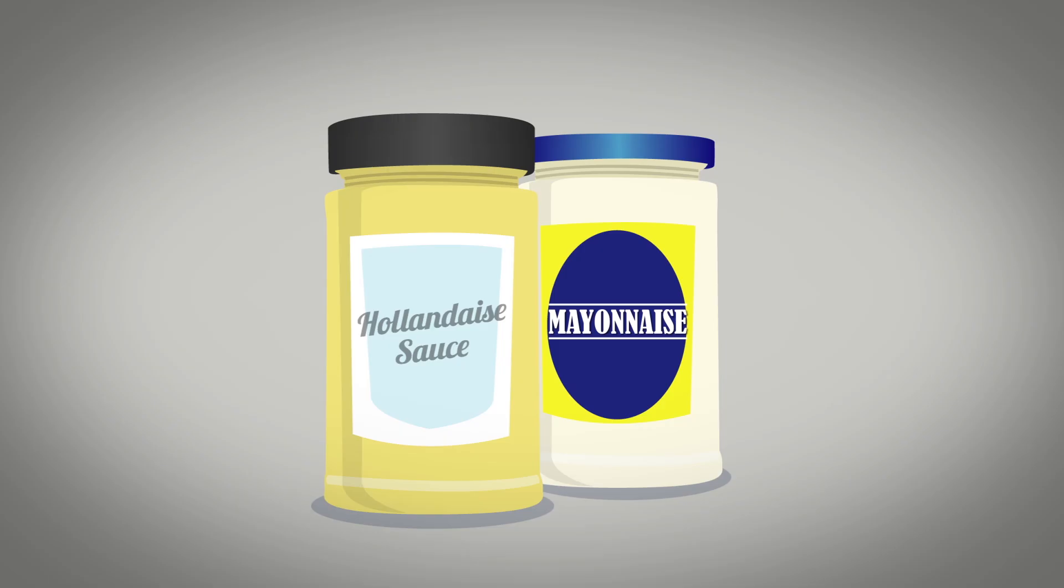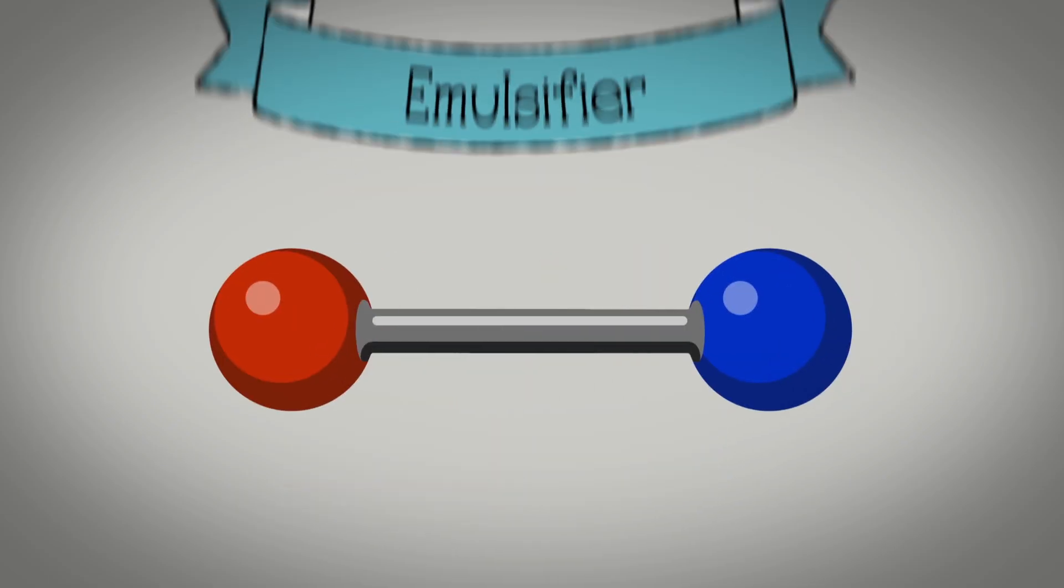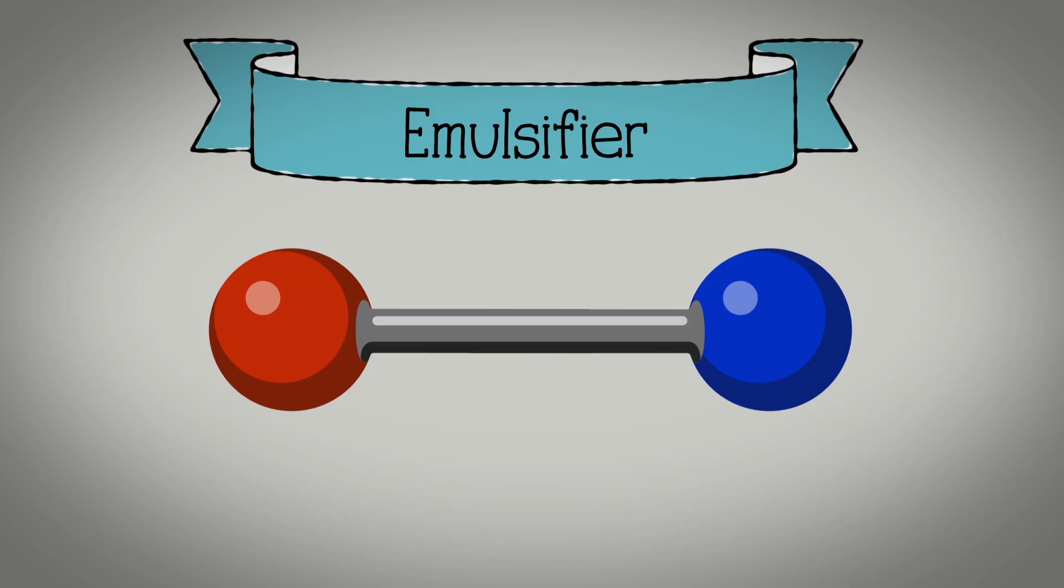This is how an emulsifier works. Emulsifiers are molecules with two ends. One end is attracted to water. It's hydrophilic. It loves water.